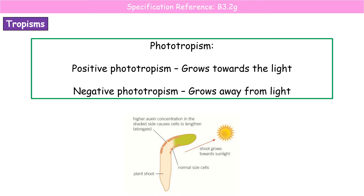The way this works is that auxin is produced in the tips of the shoot. It diffuses back down into the actual shoot and accumulates on the shaded side. So on the side in the shade — because the sun is shining from the other side — we get an accumulation of auxin. This causes those cells to elongate and the whole shoot then bends towards the light. That's phototropism.